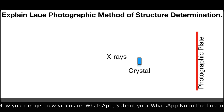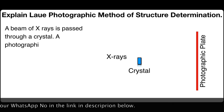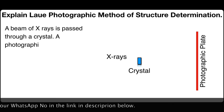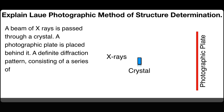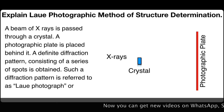An arrangement of a typical setup of Laue's method is shown in the figure. A beam of X-rays is passed through a crystal. A photographic plate is placed behind it. A definite diffraction pattern consisting of a series of spots is obtained. Such a diffraction pattern is referred to as a Laue photograph or Laue pattern.